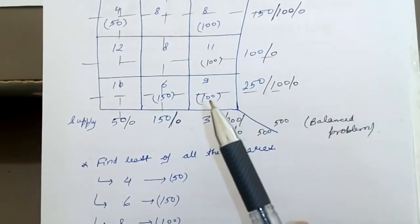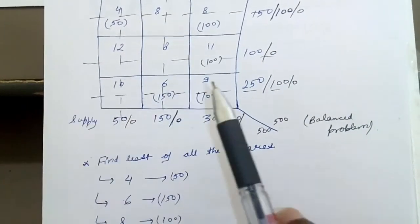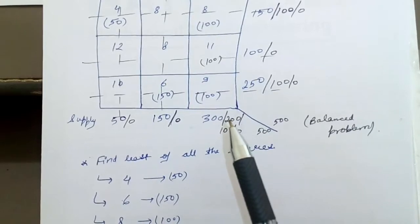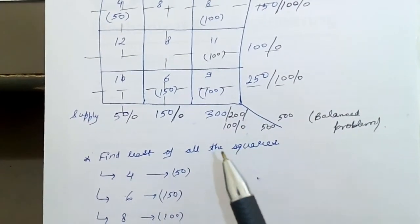Now only one block is left in the last step, that is this 11. So you write 100 here. 100 is demanded and 100 is needed to be supplied, so 0, 0 and you cross this.